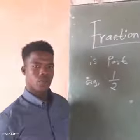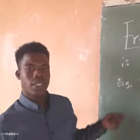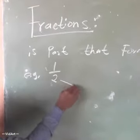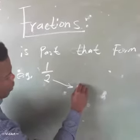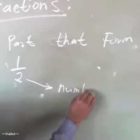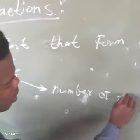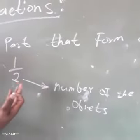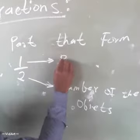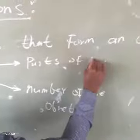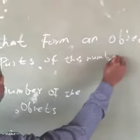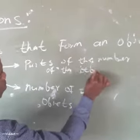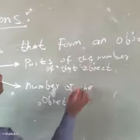If you look at one over two, you can ask yourself how is it formed. The two here is the number of the object — the total number of the object you're gonna be dealing with. And the one here is the part of that object.